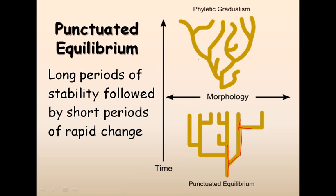In phyletic gradualism, it's a gradual process — development and growth involve gradual branching and deep branching from points, so stability and change both proceed at a minimum, constant rate. Looking at the diagram, one axis represents morphology and the other represents the time scale, showing how evolution is actually progressing. That covers the basics of population genetics — I hope it helps. Thank you.